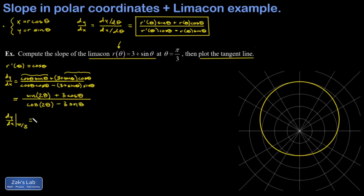Now I evaluate my slope at theta equals pi over 3. And of course, pi over 3 and 2 pi over 3 are special angles. The sine of 2 pi over 3 is root 3 over 2. The cosine of pi over 3 is 1 half. Cosine of 2 pi over 3 is negative 1 half. Sine of pi over 3 is root 3 over 2.